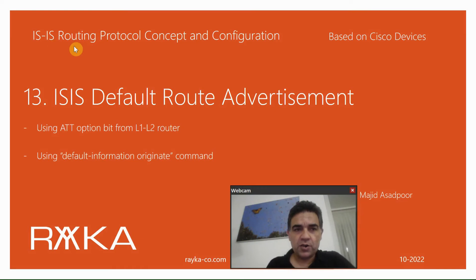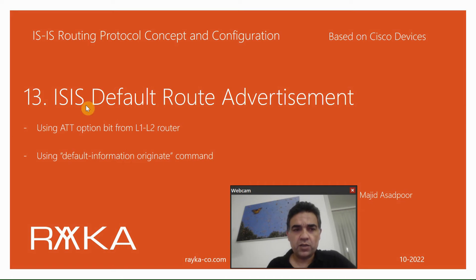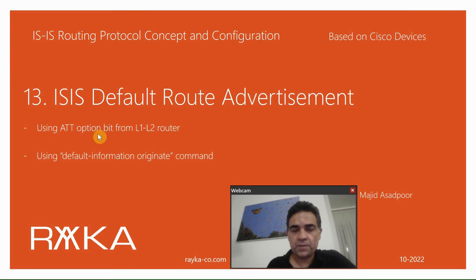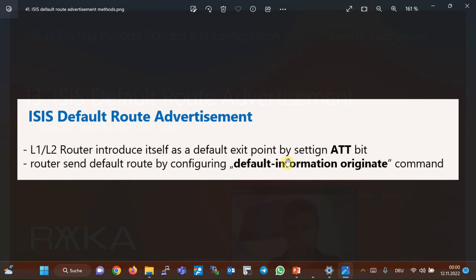Welcome to another video on ISIS routing protocol concepts and configuration. In this section we will learn how to advertise default routes through the ISIS routing protocol. There are two methods a router can learn the default route. The first is through level one level two routers with the ATT bit option, and the second method is to use the command 'default information originate' in any router to advertise the default route through ISIS.